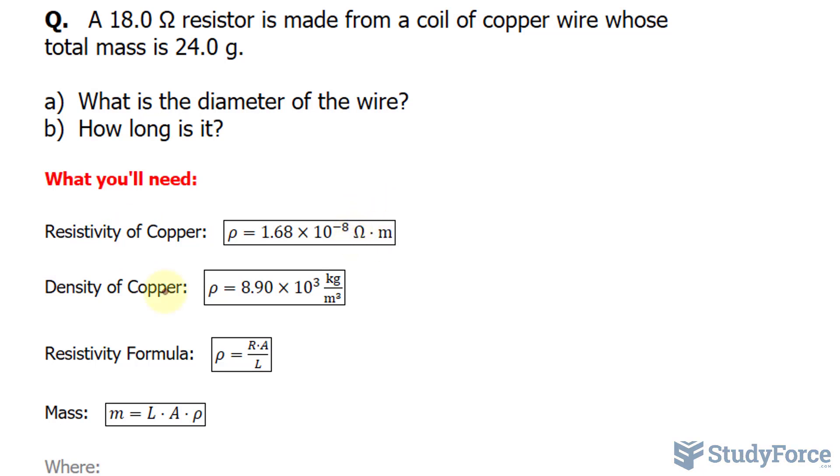You also need to know the density of copper and unfortunately they both use the letter rho so you need to change one into another letter just for the time being. Let's call this sigma just to prevent any confusion. And that is equal to 8.90 times 10 to the power of 3 kilograms per meters cubed.